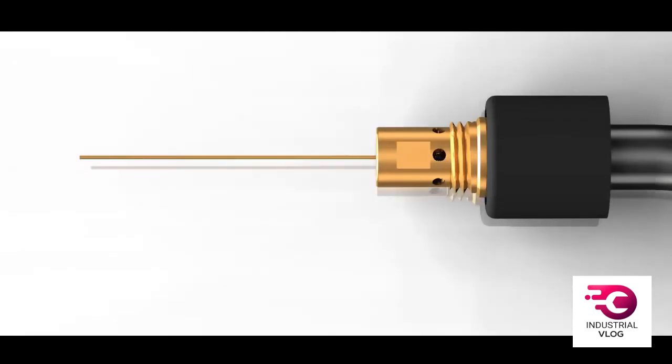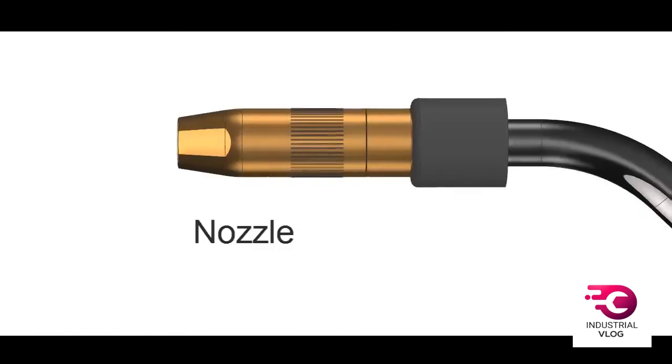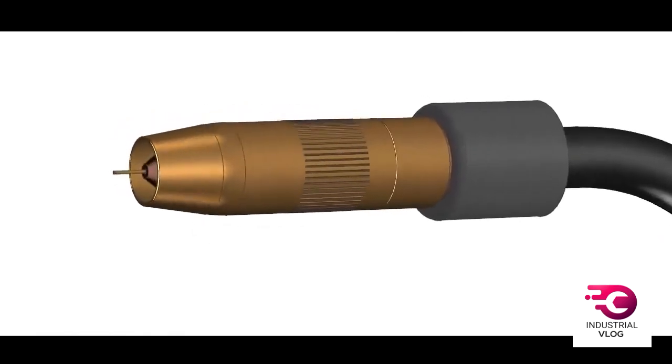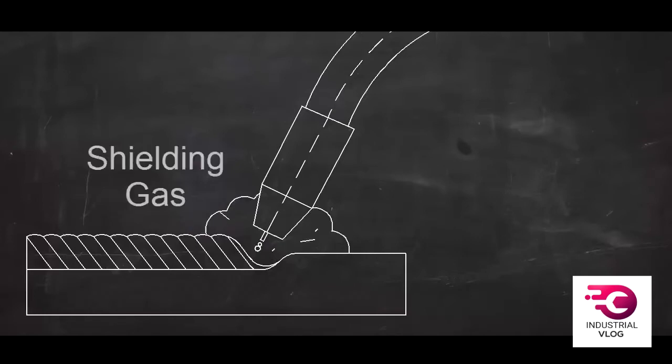Shielding gas is also fed through the welding lead. It goes through a gas diffuser and flows out of the nozzle. This shielding gas, which is often a mix of argon and CO2, protects the molten metal from reacting with oxygen, water vapor, and other things in the atmosphere.